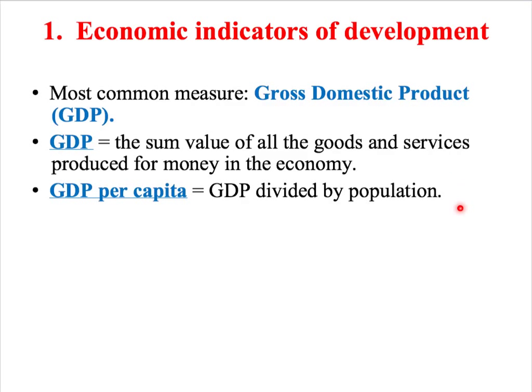GDP per capita is GDP divided by the number of people living in the country — the population — to ensure the measure is not skewed by population size. For example, China has a very high GDP and is in fact the biggest economy in the world. But because there are over 1.3 billion people living in China, its GDP per capita rank is not as high as its overall GDP rank, giving a more realistic view of the country's wealth.